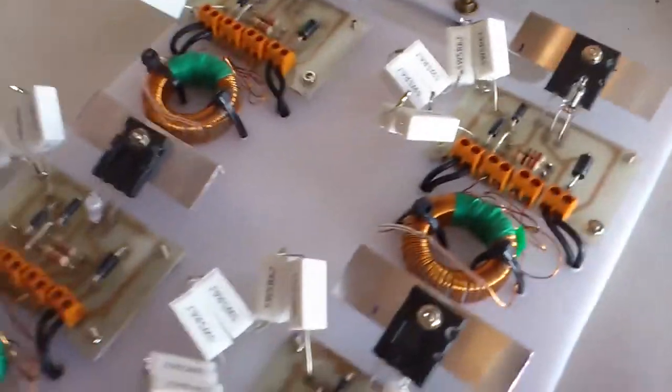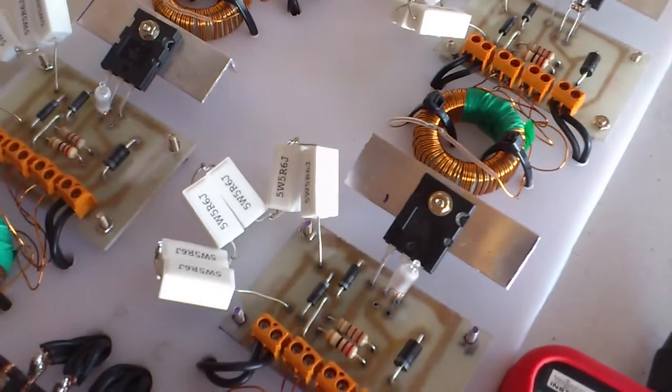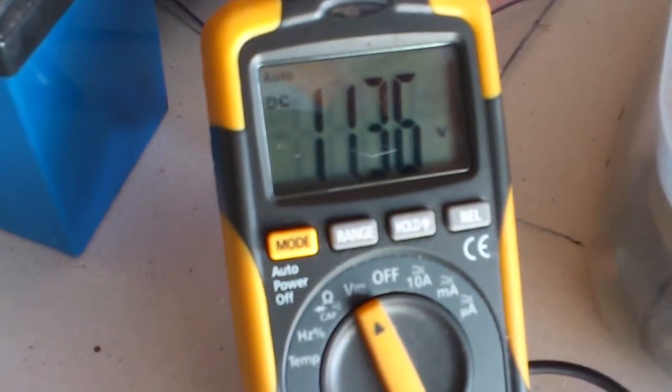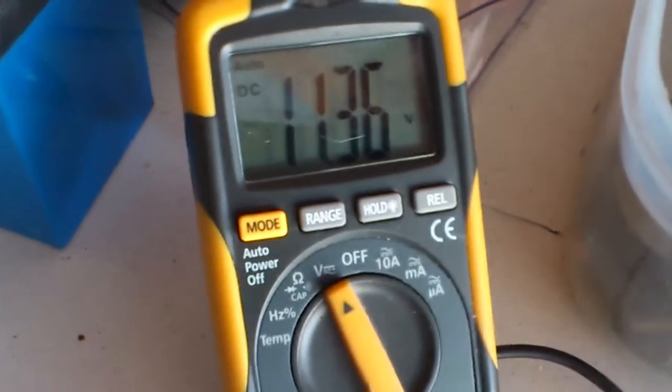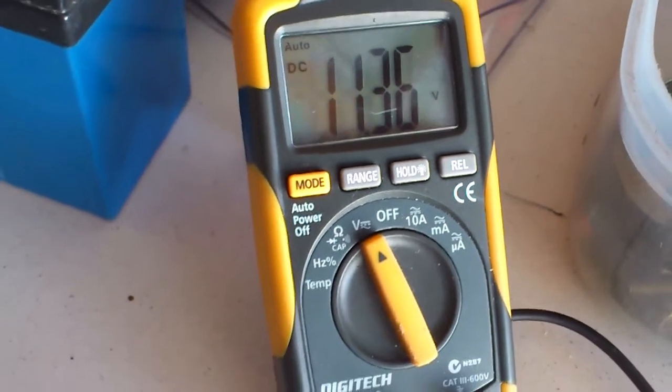Now I'll connect the charge part of the circuit, which is this here, and it's reading 11.36. Now this battery isn't the best, and I'm just trying to condition it with this particular charger.